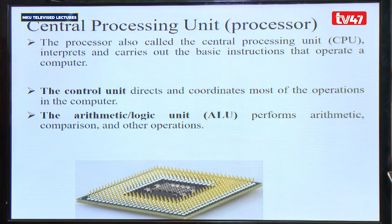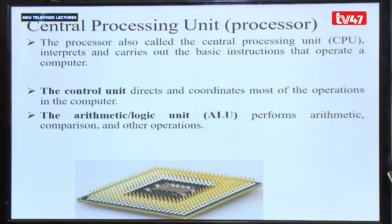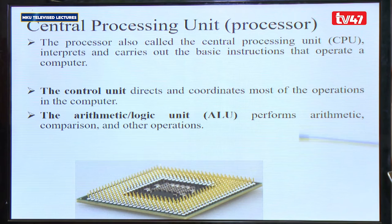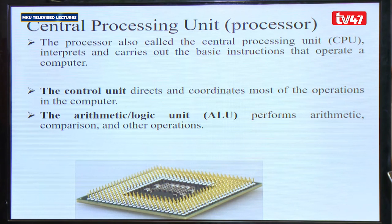We have the central processing unit — in brackets, the processor. My first mentor in computer science used to tell us that a processor is like the brain of the computer. I think it's more like the abdominal place where you process everything in your body. The processor, also called the CPU, interprets and carries out basic instructions that operate a computer.